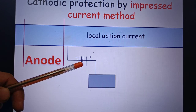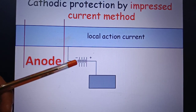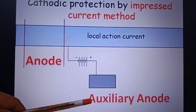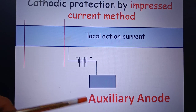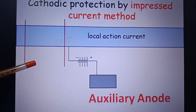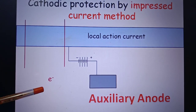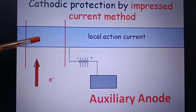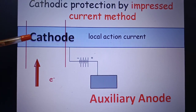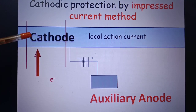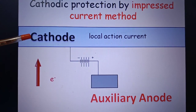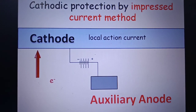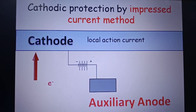If we apply a slightly higher potential, then the other electrode will act as an auxiliary anode instead. Electrons will flow from this auxiliary anode to the metal, and the metal will now act as a cathode and get protected in the process. This method is called the impressed current method.